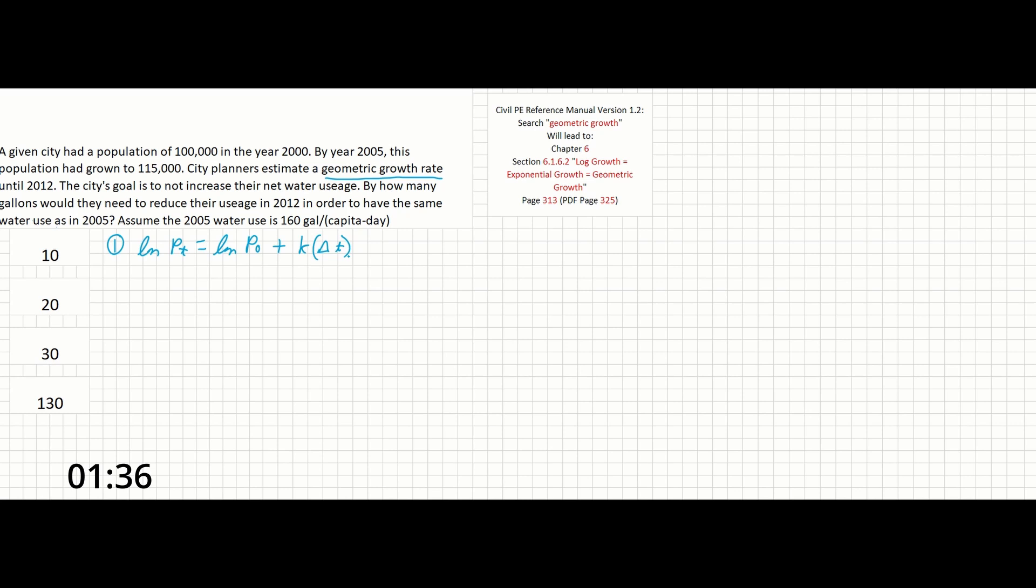So we can begin to fill this equation out and find our growth rate. So p sub t is going to be our population at the year 2005, and p sub 0 is going to be our population in the year 2000. We are solving for k since our first goal is to find the geometric growth rate, and we know that t is going to be the difference in years. Let's call it year one to year zero.